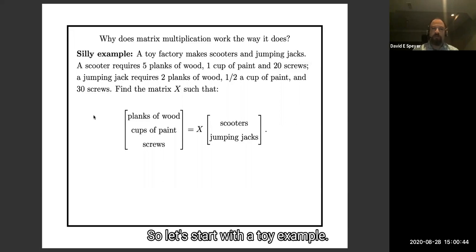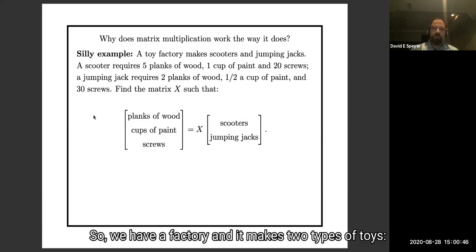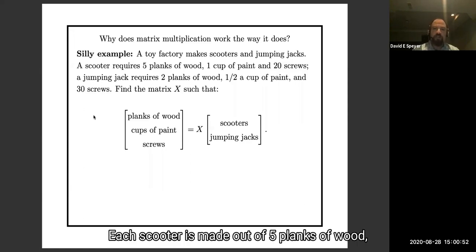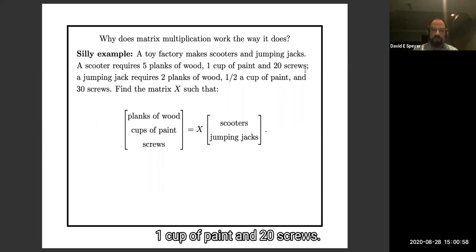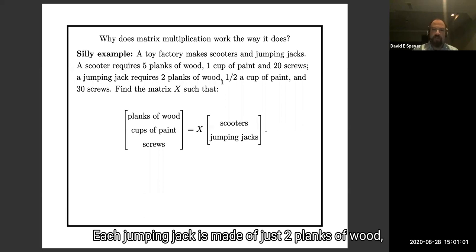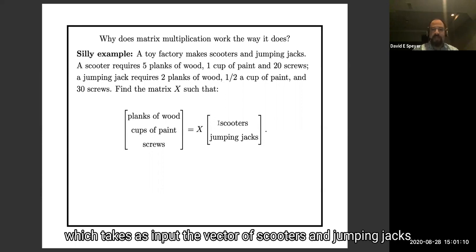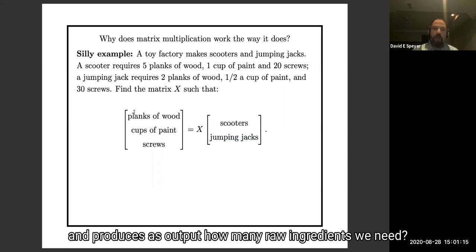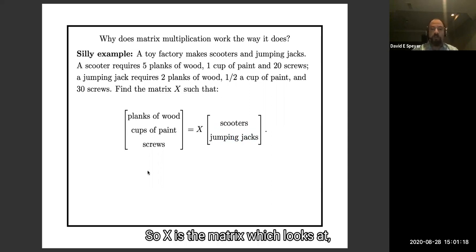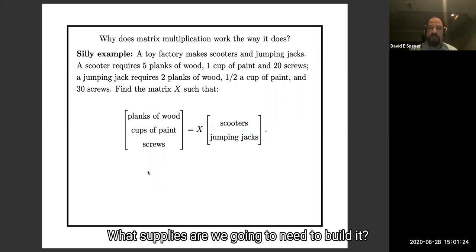So let's start with a toy example. We have a factory. It makes two types of toys, scooters and jumping jacks. Each scooter is made up out of five planks of wood, one cup of paint, and 20 screws. Each jumping jack is made of just two planks of wood, half a cup of paint, and 30 screws. Please write down the matrix X, which takes as input the vector of scooters and jumping jacks, and produces as output how many raw ingredients we need. So X is the matrix which looks at, oh, we want to build this stuff. What supplies are we going to need to build it?